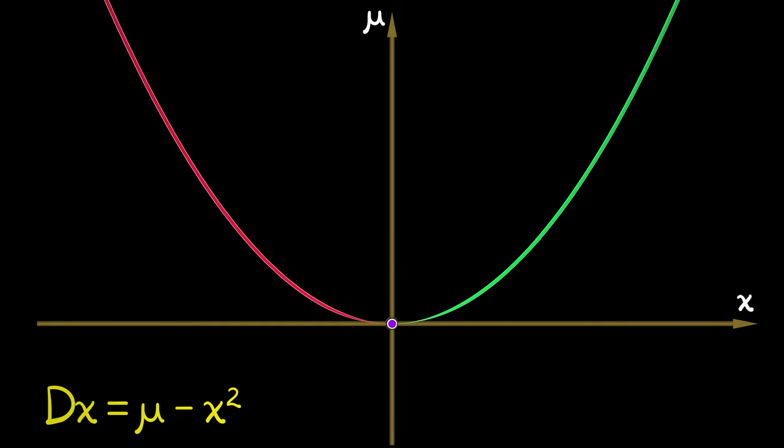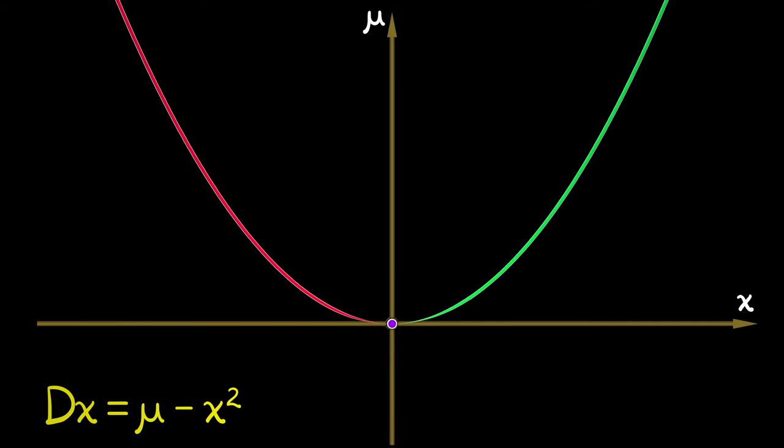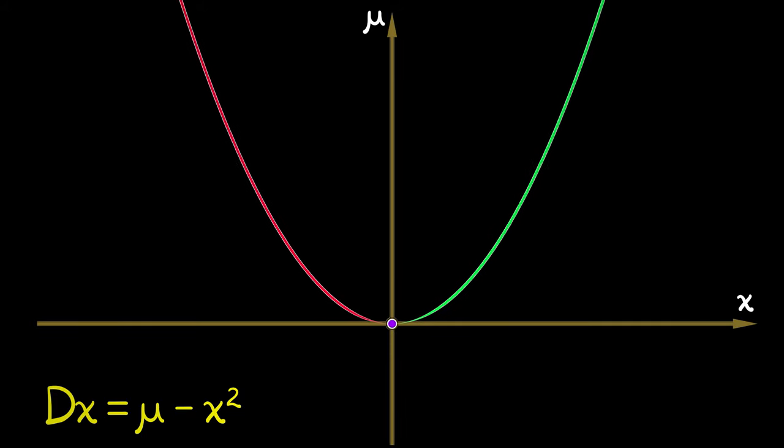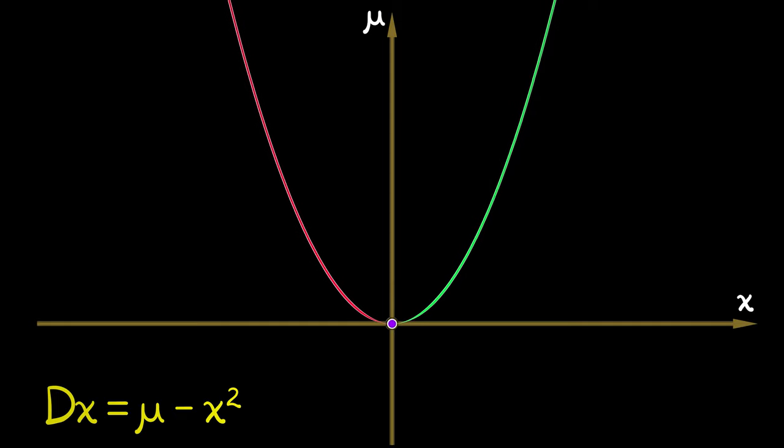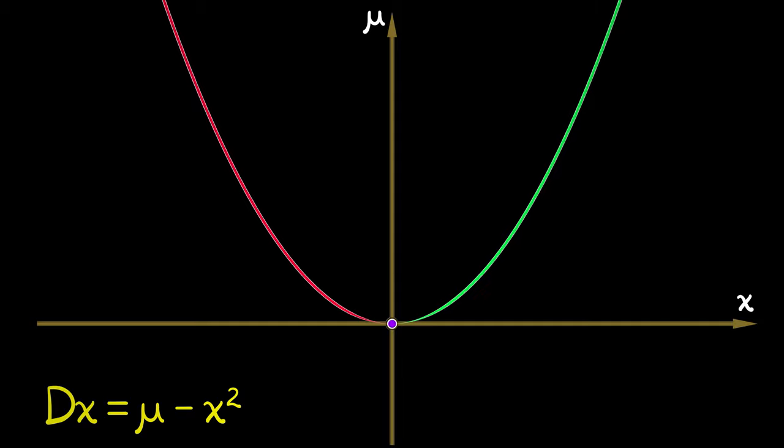Now, if we change the value of c, then this parabola might get wider or skinnier. It might flip upside down, but you're going to have this same phenomena of going from zero equilibria to one equilibrium at the bifurcation point to a stable-unstable pair of equilibria. That's what a saddle node looks like.